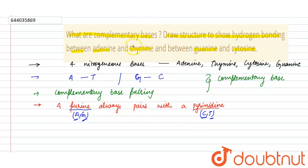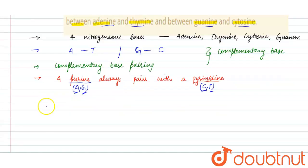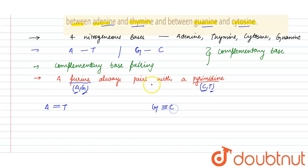Now, let's draw the structure of hydrogen bonding between adenine and thymine, and between guanine and cytosine. As we know, adenine is bonded with thymine by two hydrogen bonds, while guanine is bonded with cytosine by three hydrogen bonds. Now their structures are as follows.